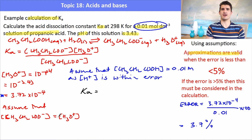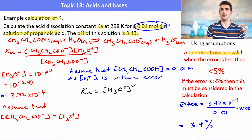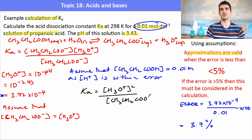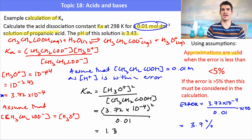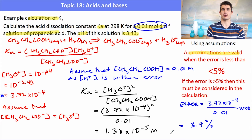Now we can plug values into the Ka expression. We've got the H3O+ concentration and assumed the anion concentration equals H3O+, so that becomes squared. We divide that by the concentration of the acid. So Ka equals (3.7 × 10⁻⁴)² divided by 0.01, which gives us a Ka value of 1.38 × 10⁻⁵ molar. That's the Ka value for propanoic acid — fairly low, which confirms it's a weak acid.